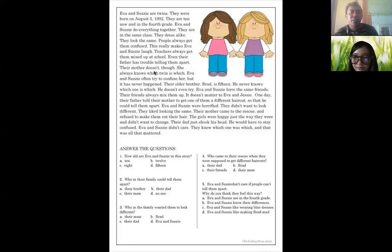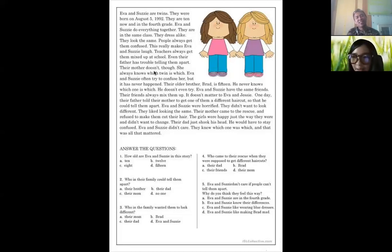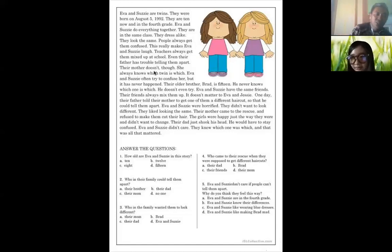It says 'even their father has trouble telling them apart' — so what does that mean? In your opinion, did they have a problem every day between Eva and Susie? Yes, every day. I think their father doesn't know Eva and Susie even after 10 years — even though they have stayed together for 10 years, their father still doesn't know. Okay, moving on to number three.